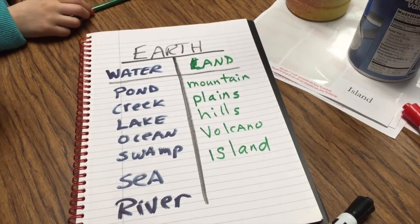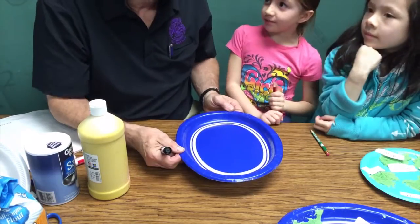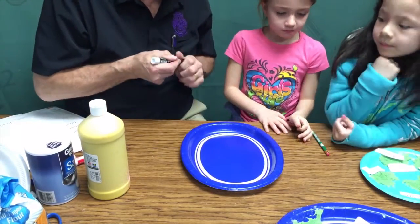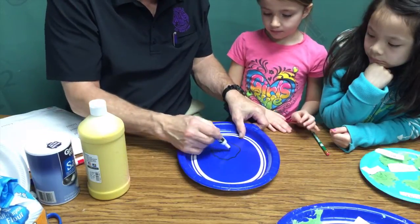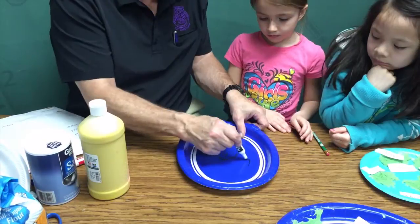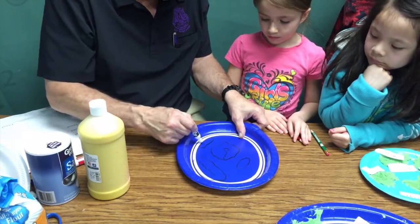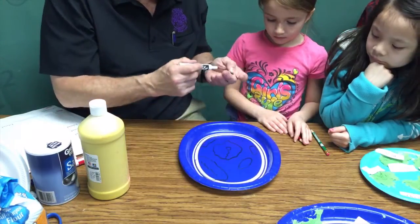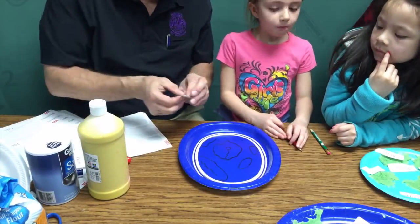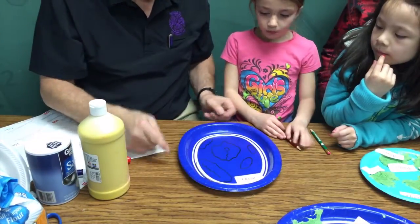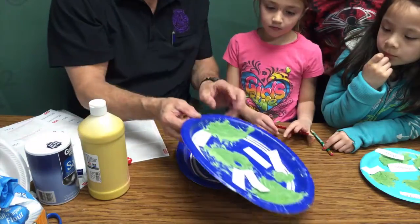We're going to do a project right now you're really going to like. We're going to make a cool model. I'm using this plate and I made it blue. Why do you think this is blue? It's the ocean. It's going to be the ocean. If we were flying over this, we might have a big piece of land. We might have a lake on it, a river going through it. What do you call that over there? Island. Maybe an island, maybe some big land over here with mountains on it. There's some islands, and this is all in the ocean. We'll put the word ocean right here.